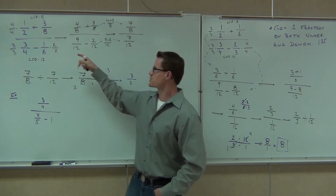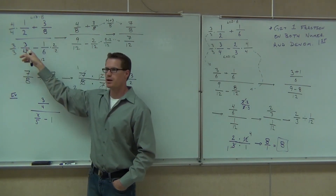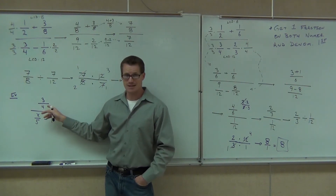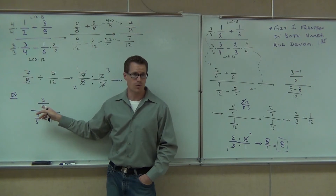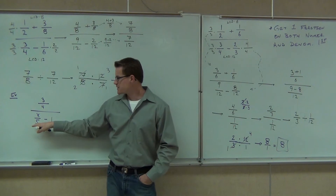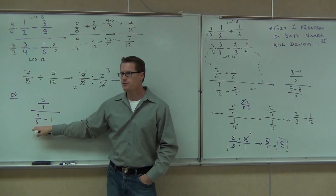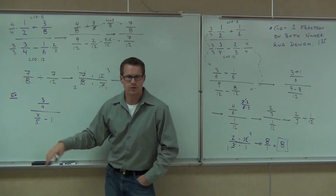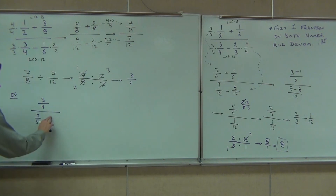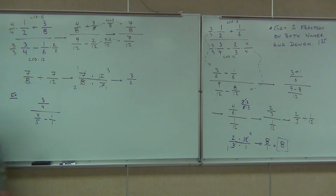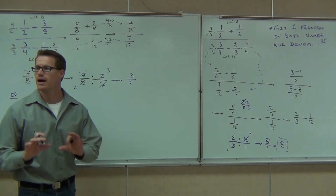Whereas in the previous examples we had a couple fractions on top and a couple on the bottom, here we have one fraction on the top — and that's actually a good thing. That's what we want. We want one fraction on the top, so leave it alone. On the denominator, though, we've got one fraction and a whole number. Can you change a whole number into a fraction? Yes — so we're going to change that to one over one, making two fractions on the denominator.